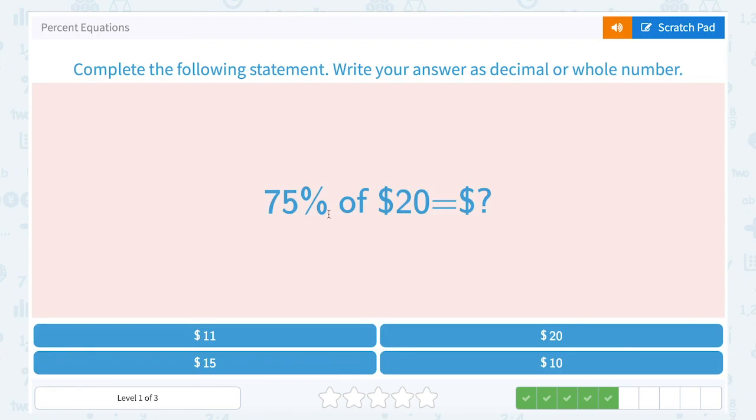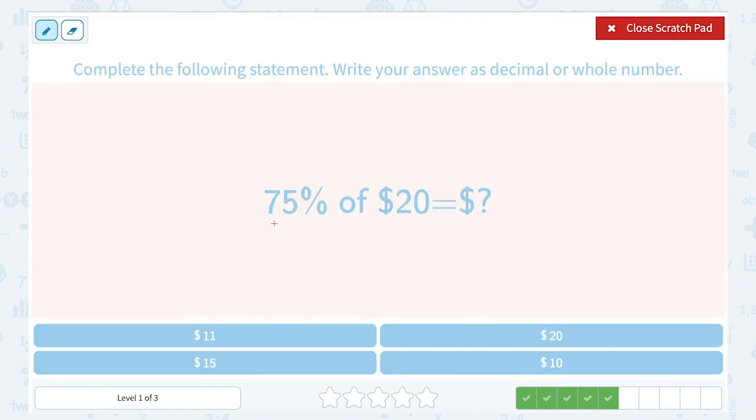75% of $20 is equal to what? Okay, well, let's take our 75% and write it as a decimal. 75% is the same as 75.0%. So to turn that into a decimal, I need to move my decimal point 2 places, which gives me 0.75. Of is a keyword that tells us to multiply. So 0.75 is multiplied by 20. And let's see what that gives us.